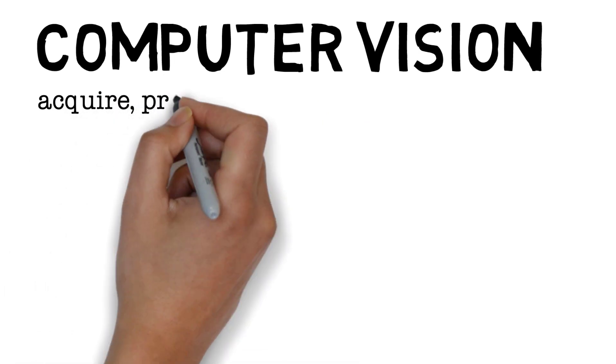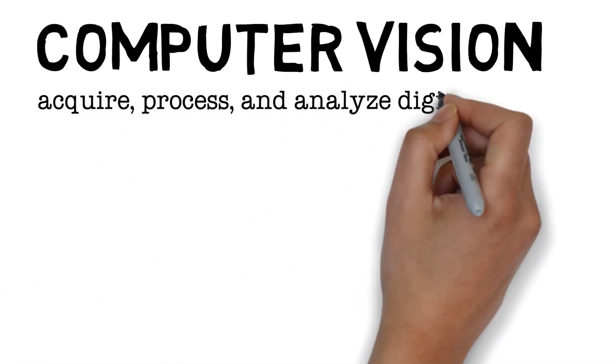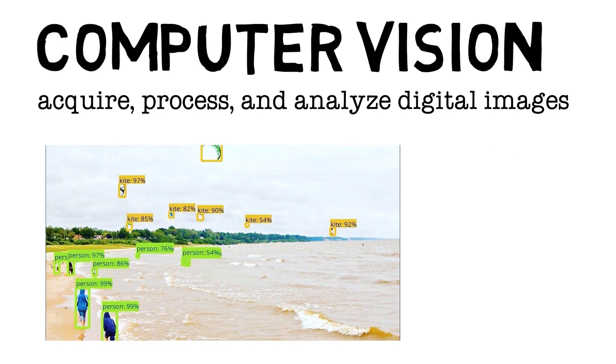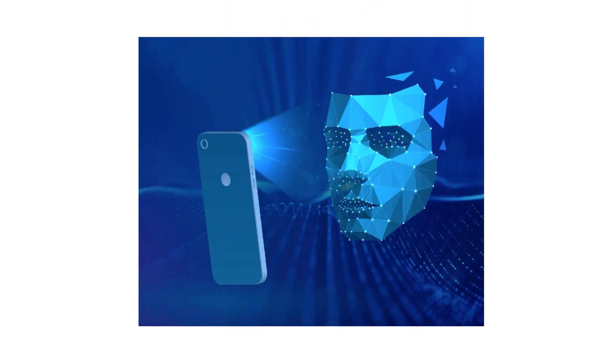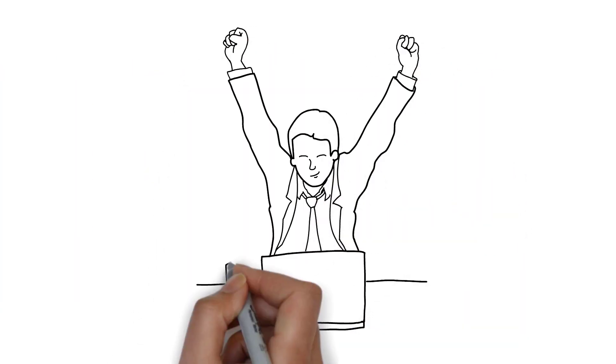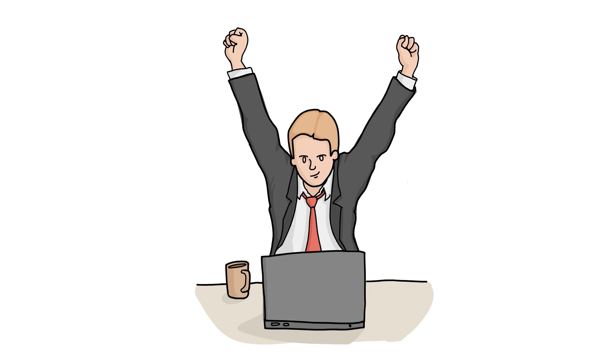Computer Vision gives machines the ability to acquire, process, and analyze digital images. They can use this information to find patterns and make decisions. How does an iPhone unlock itself as soon as you show it your face? Computer Vision. How does a self-driving car know exactly where to go? Computer Vision. So, as you can see, Computer Vision is incredibly powerful and can do amazing things.